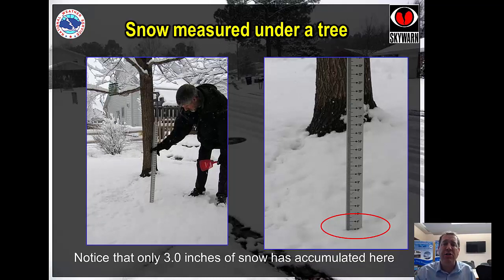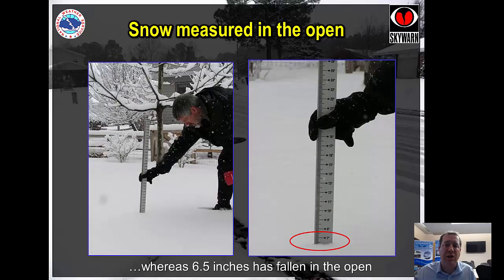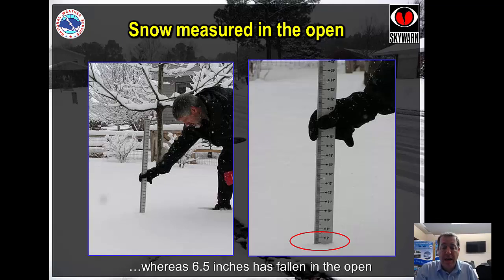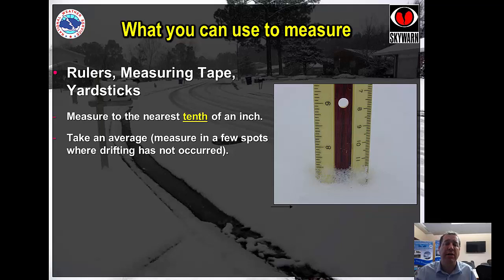This gentleman is measuring snow under a tree on a typical suburban lot. You might say, what's wrong with that? There's snow there and he measures about three inches. But as he steps just a few feet into the yard — again, a typical suburban lot — he's measuring six and a half inches of snow. So do not measure under a tree or next to tall objects.